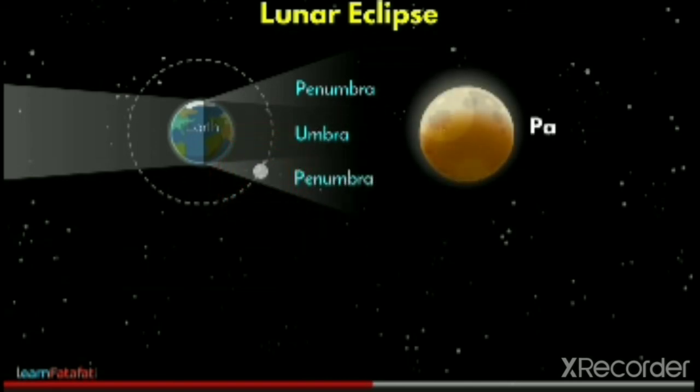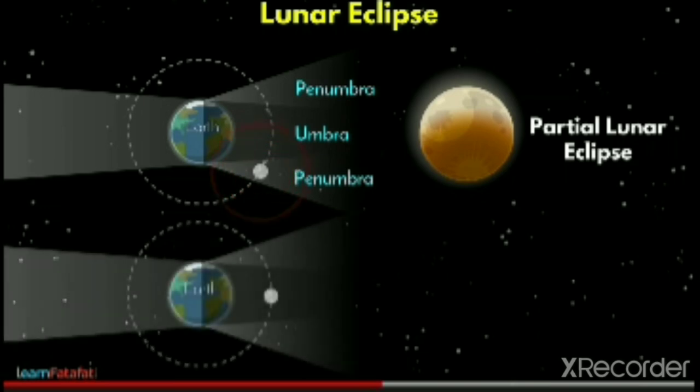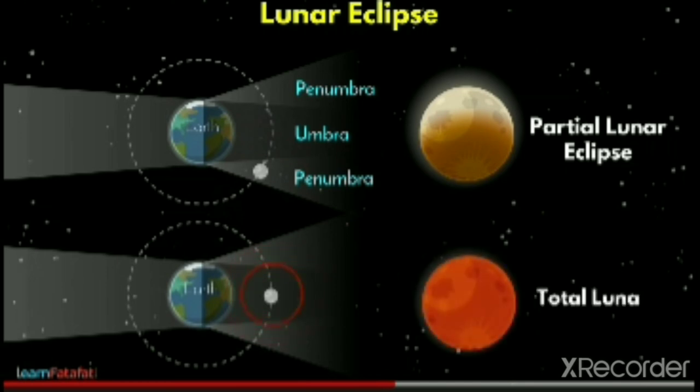If you stand in the penumbra region, we can see a partial lunar eclipse. But if we stand in the umbra region, we see a total lunar eclipse.